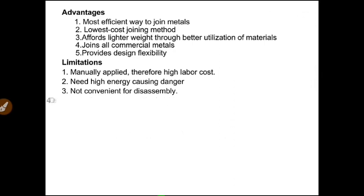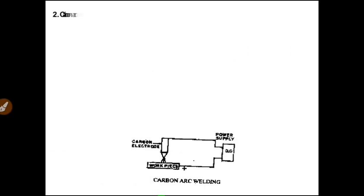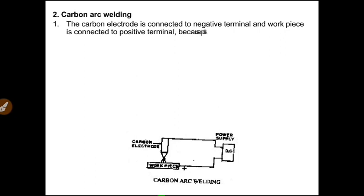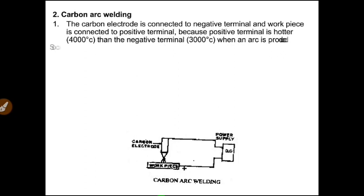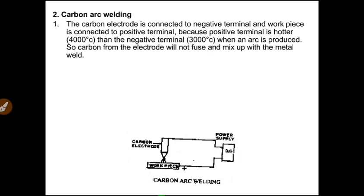For AC welding, a step-down transformer reduces voltage from 220–440 volts down to 60–90 volts. In carbon arc welding, the electrode is connected to the negative terminal and the workpiece to the positive terminal. The positive terminal reaches approximately 4200 degrees Celsius and the negative terminal approximately 3200 degrees Celsius.